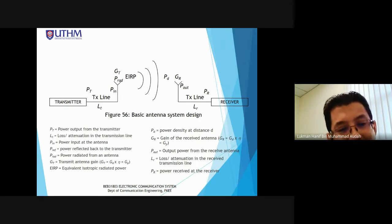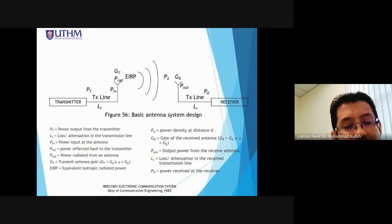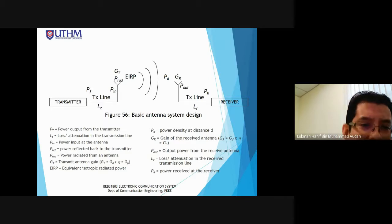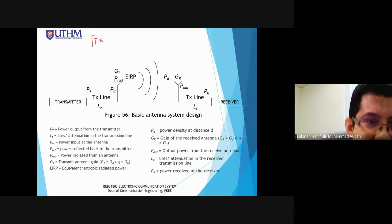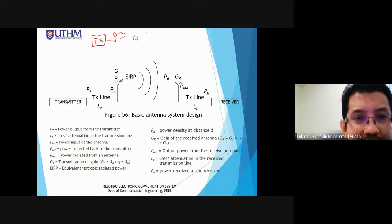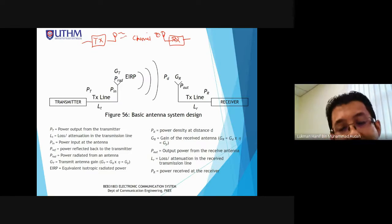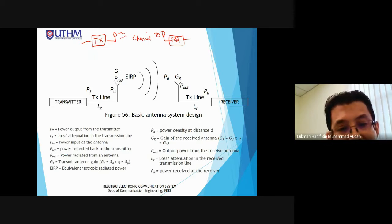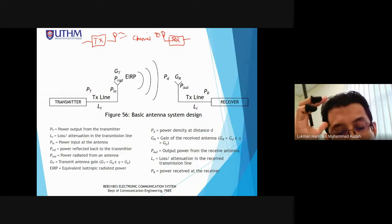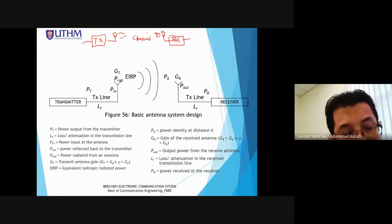This is my favourite diagram — the final system design for transmitter and receiver, which is what you will study in Chapter 5. There are many parameters to learn. The first is PT: the output power from the transmitter. The power coming out of the transmitter is PT.